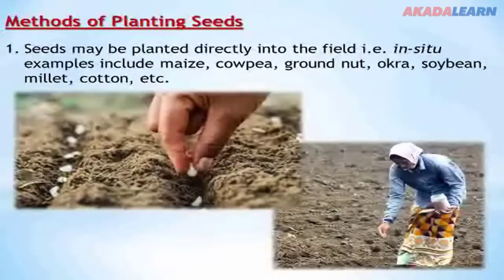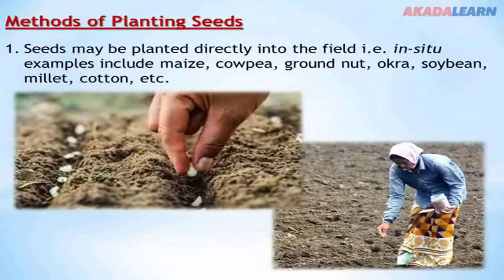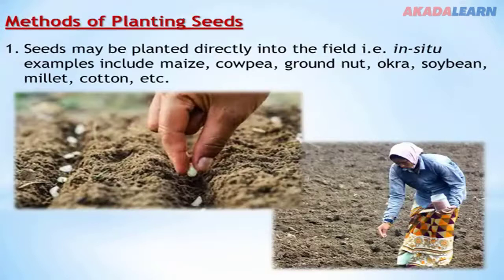Examples of such seeds planted in situ are maize, cowpea, groundnut, okra, soya beans, millets, and cotton seeds, among others.